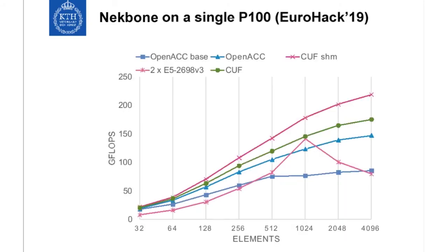Now we start to see real progress: we are past the CPU performance and getting close to the roofline, based on an experimental roofline for the kernel we are evaluating. The reason is that we are using shared memory — loading all the data into a 3D block in shared memory is much faster than the code generated by OpenACC.